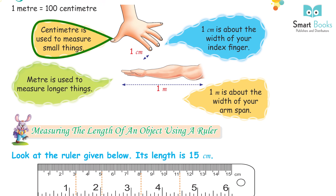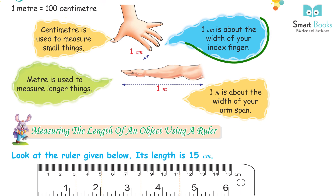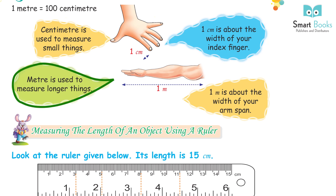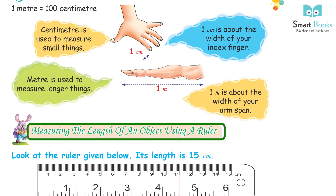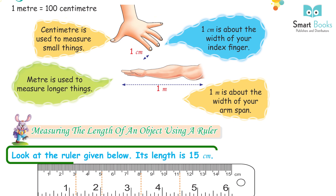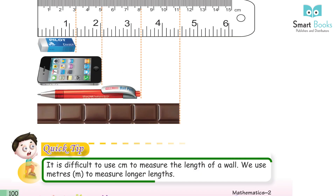Centimeter is used to measure small things. 1 centimeter is about the width of your index finger. Meter is used to measure longer things. 1 meter is about the width of your arm's span. Look at the ruler given below — its length is 15 centimeters.